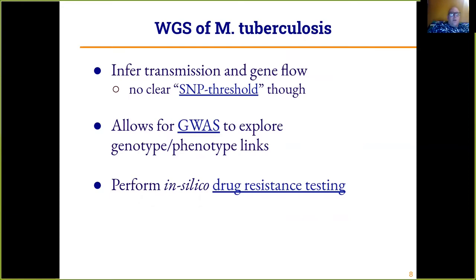That brings us to whole genome sequencing. The advantages of whole genome sequencing are that we can infer transmission and, to some degree, gene or allele flow. There is no clear SNP threshold to determine whether two sequences are one transmission event — there is a lot of debate in the literature about the relationship between SNP distance and transmission — but we can more easily rule out whether two sequences are from the same cluster.